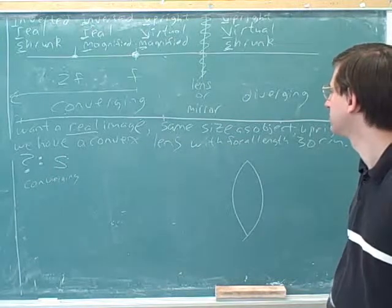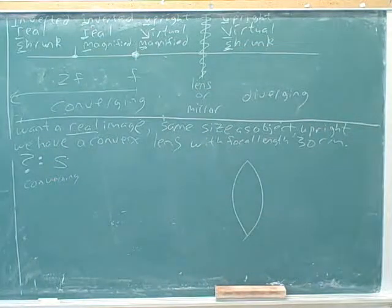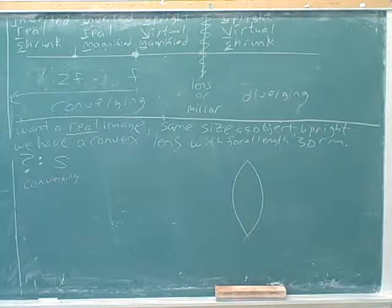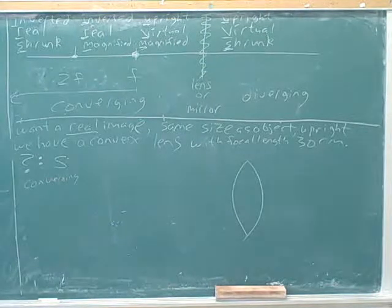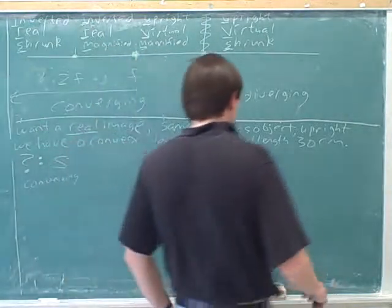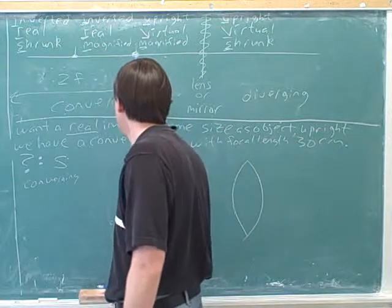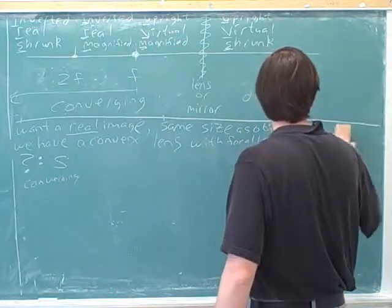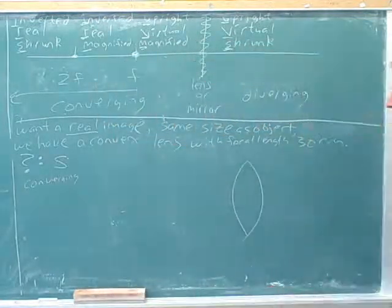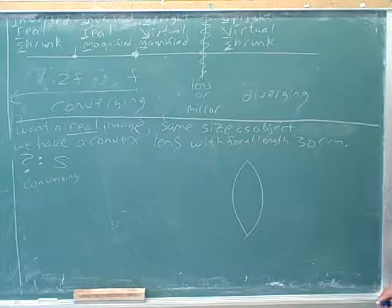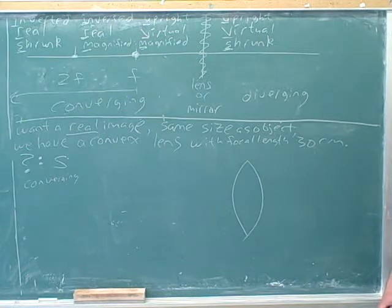And then same size as the object. So I know that when you have the same size as the object, it's at when it's twice the focal length. And then the upright thing confuses me, because it's in between two inverted. Don't tell me I still missed the problem. Oh, my goodness. Alright, let's see here. I'll just erase that. Okay. So now what? So I would think that it would be twice the focal length. Twice the focal length. Good.